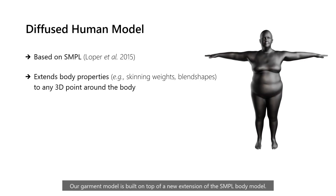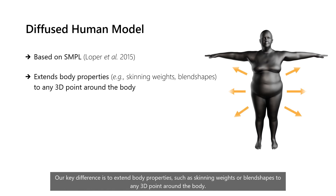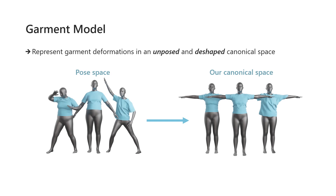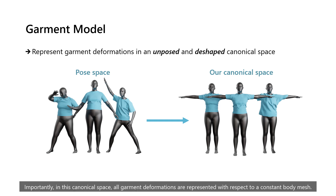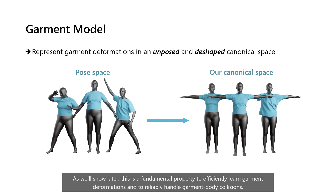Our garment model is built on top of a new extension of the body model. Our key difference is to extend body properties, such as skinning weights or blend shapes, to any 3D points around the body. We leverage these properties to define a new model for clothing that represents garment deformations in an unposed and deshaped canonical space. Importantly, in this canonical space, all garment deformations are represented with respect to a constant body mesh. As we'll show later, this is a fundamental property to efficiently learn garment deformations and to reliably handle garment-body collisions.